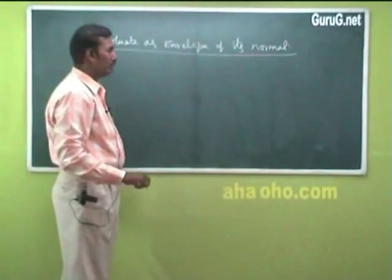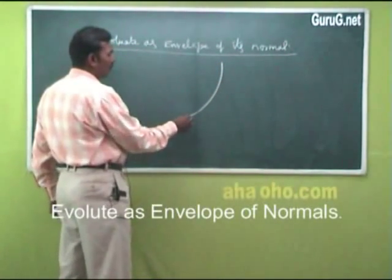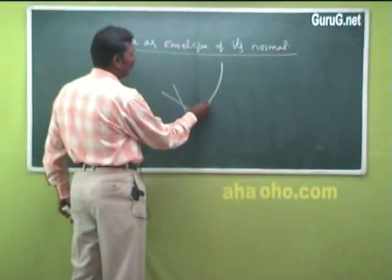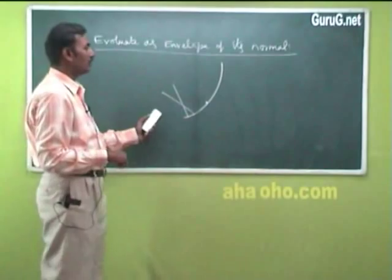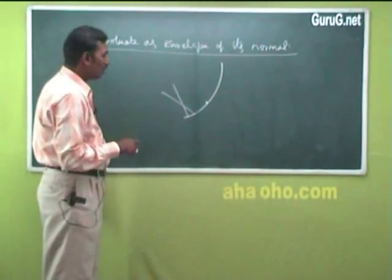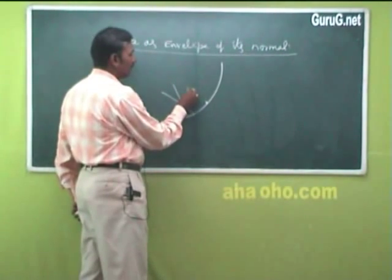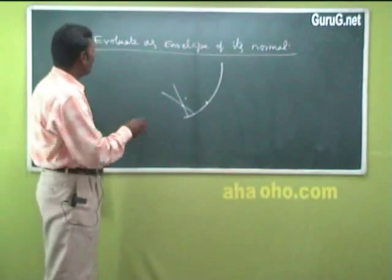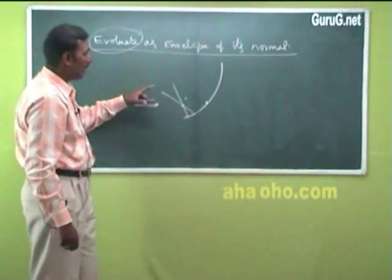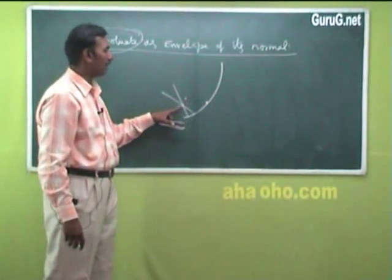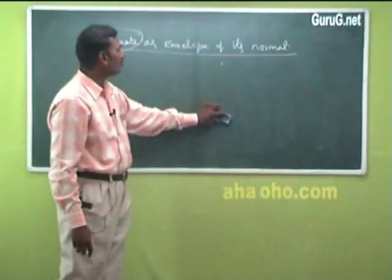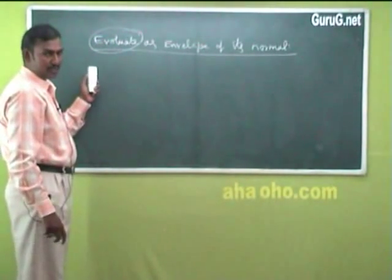Next topic: evolute as envelope of its normal. For a curve, at every point we can draw a normal line, forming a family of straight lines. The envelope of this family of normals is the locus of the center of curvature. The locus of the center of curvature is called the evolute. So the evolute is the envelope of the family of normals.